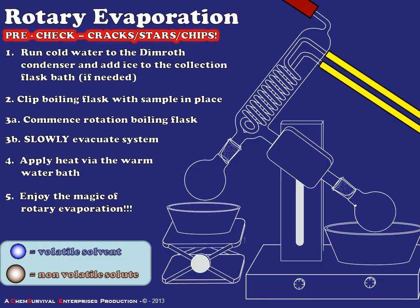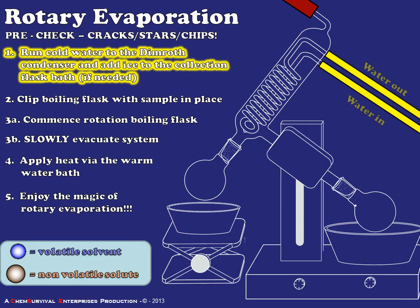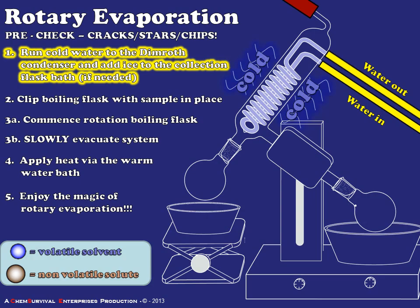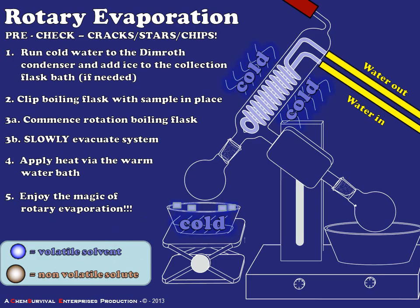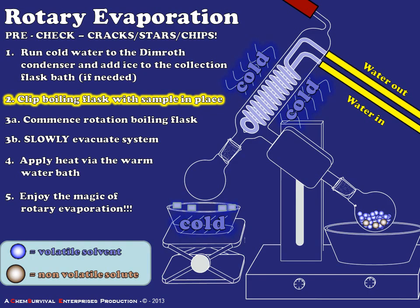If there are any irregularities like cracks, stars, or chips — any defect in the glass which goes beyond just the surface into the matrix — then the rotary evaporator needs to be taken out of service because there's a significant risk of implosion if there is a weak point in any of the glassware being used. Once we've done our pre-check, we run cold water to the Dimroth condenser to create a zone of cooling. We can also add ice to a bath around the solvent trap to accumulate as much solvent as possible in the liquid phase. The next step is to clip the boiling flask in place with your sample in it — the clip should be understood as holding that flask in place so you can let go and begin the rotation.